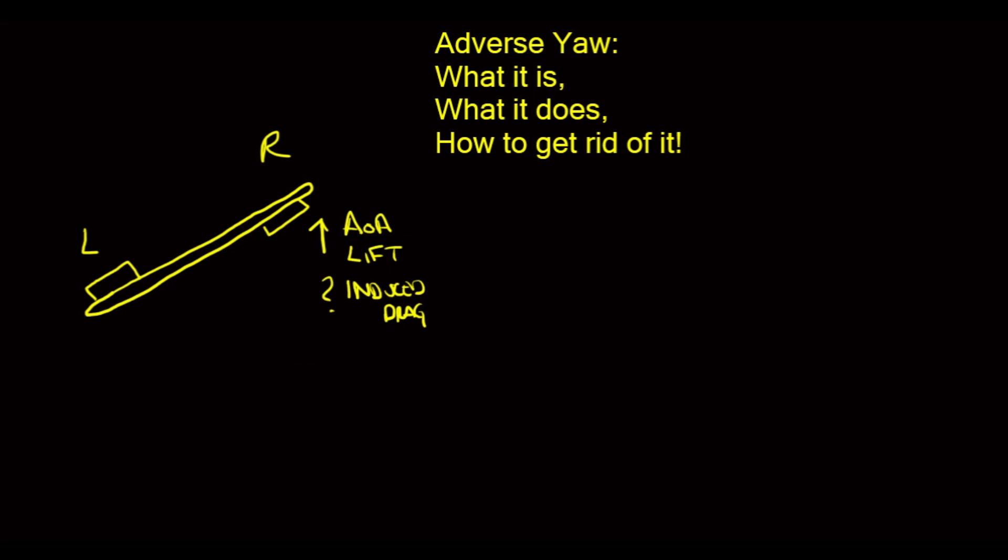If we put our hand out, we've created drag. If we throw a parachute out, we have induced drag. We change the angle of attack of just one wing, we have induced drag. It is exactly what we've done in banking to the left.